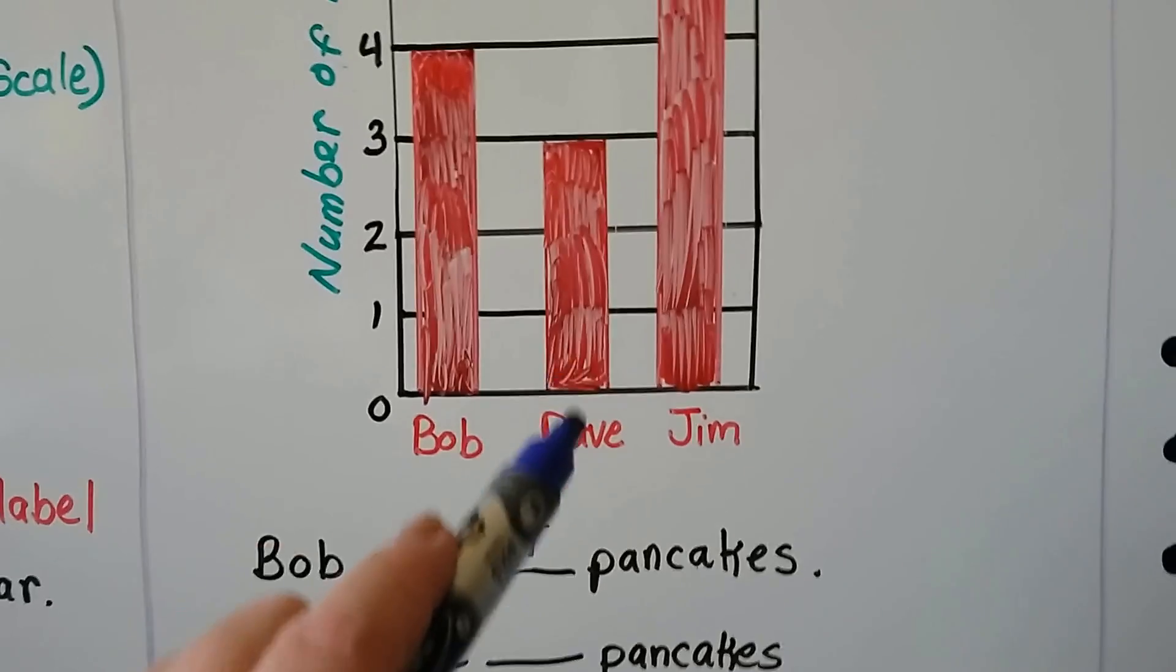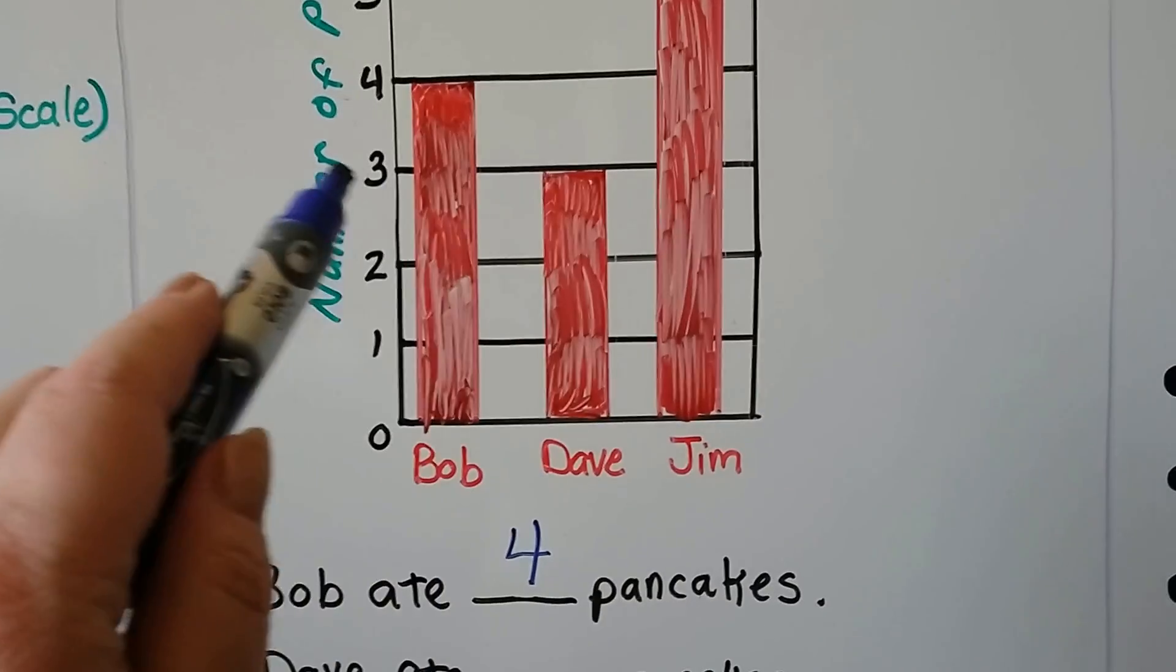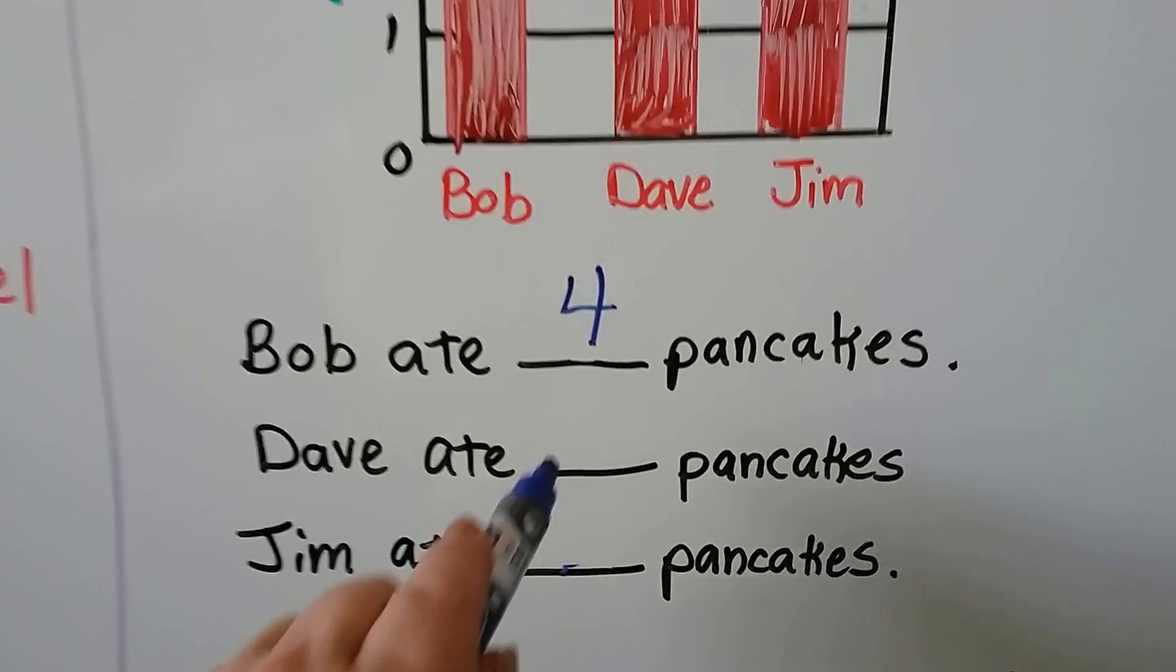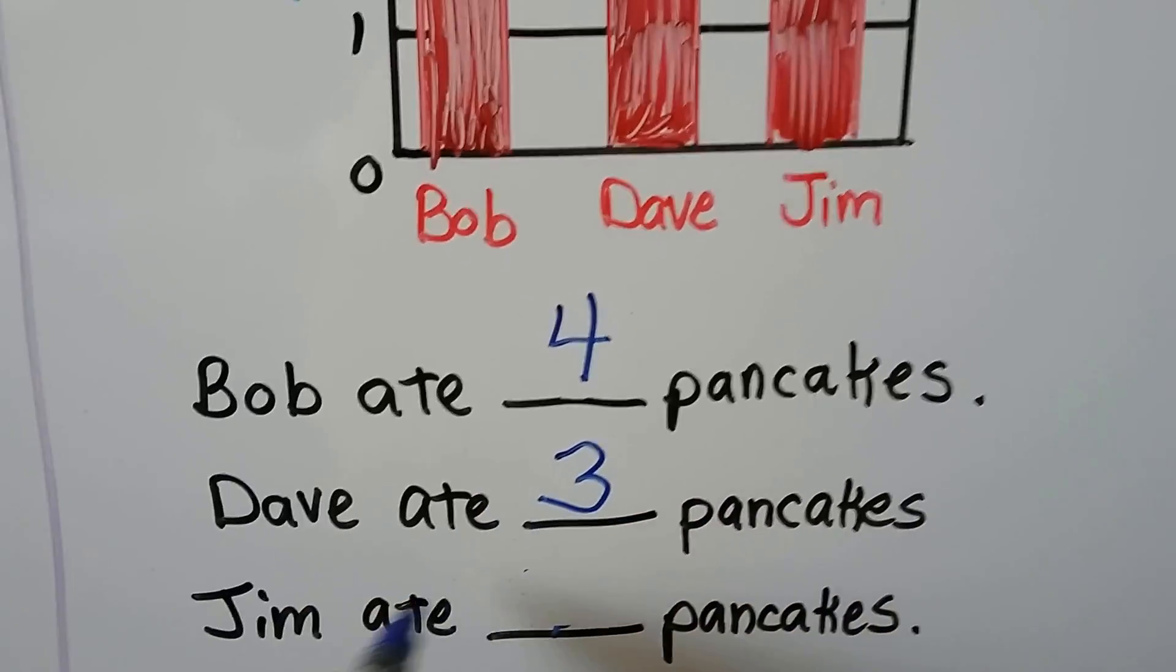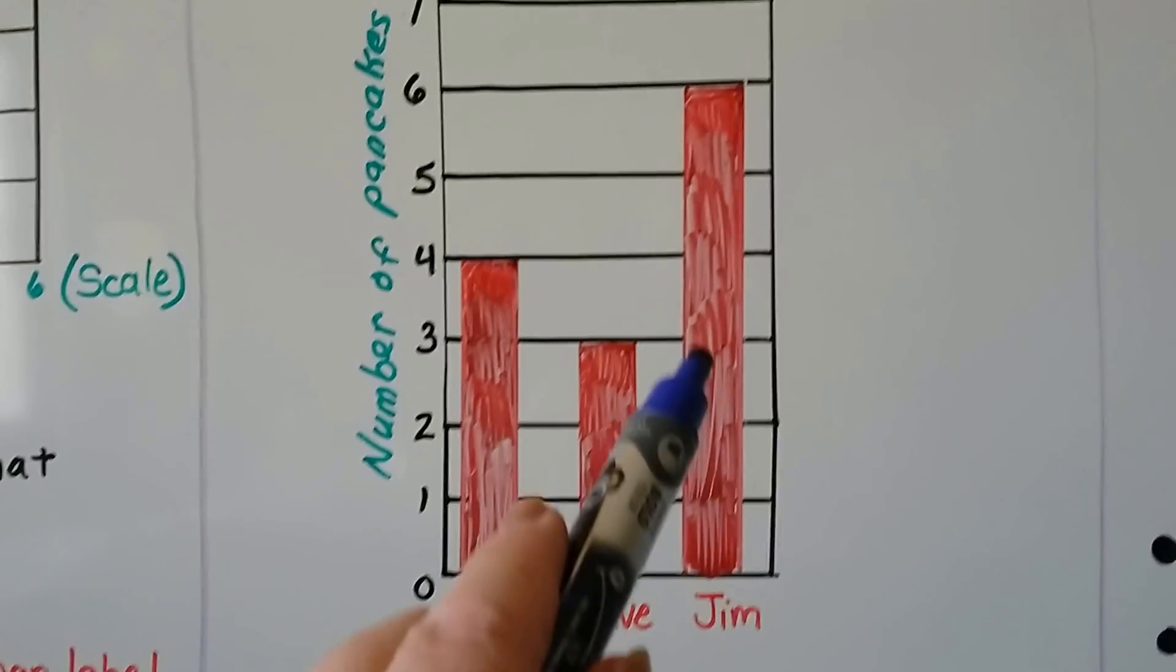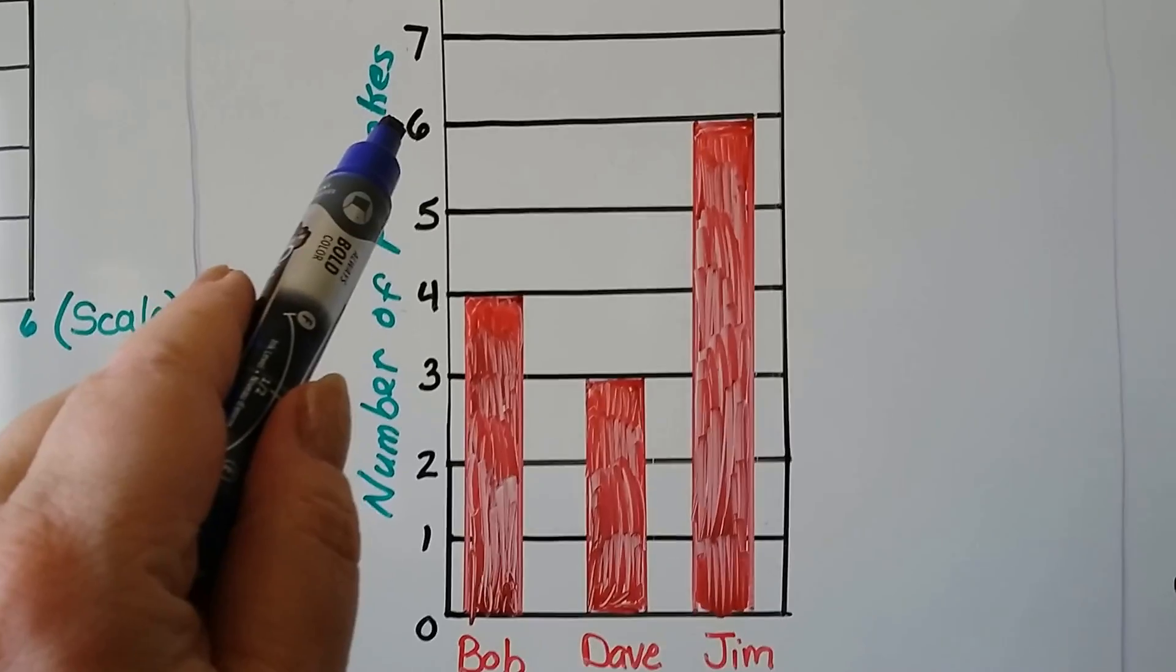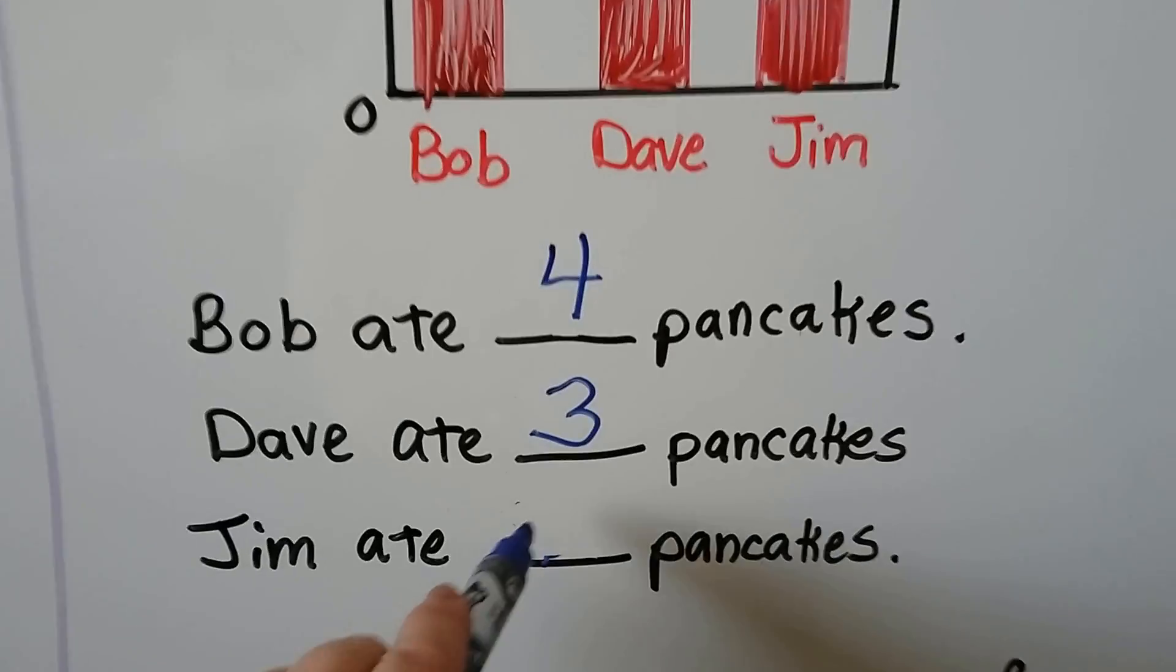Dave ate—we look at Dave and see that it goes to three. That's where his bar stops, so he ate three. Jim ate blank pancakes. We follow Jim's bar all the way up, move across to see where on the scale it is. It's at a six. He ate six pancakes.